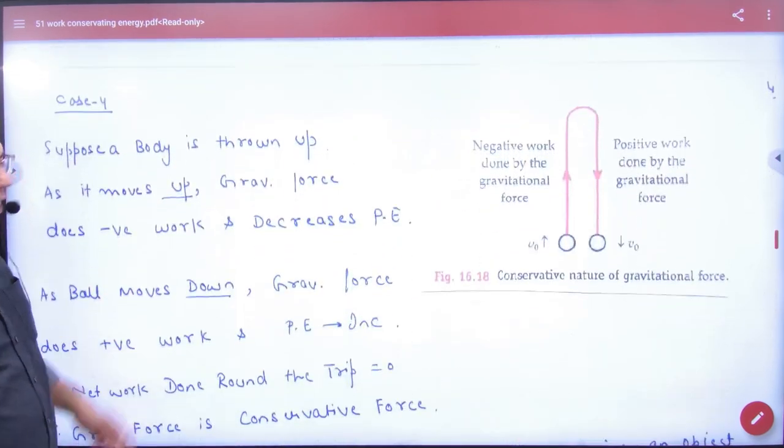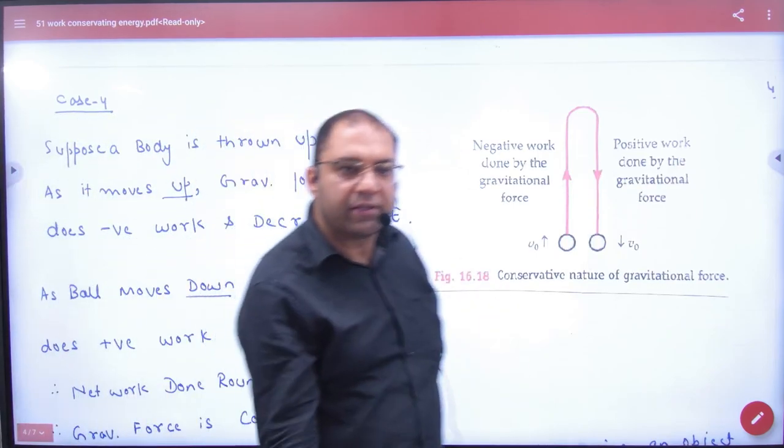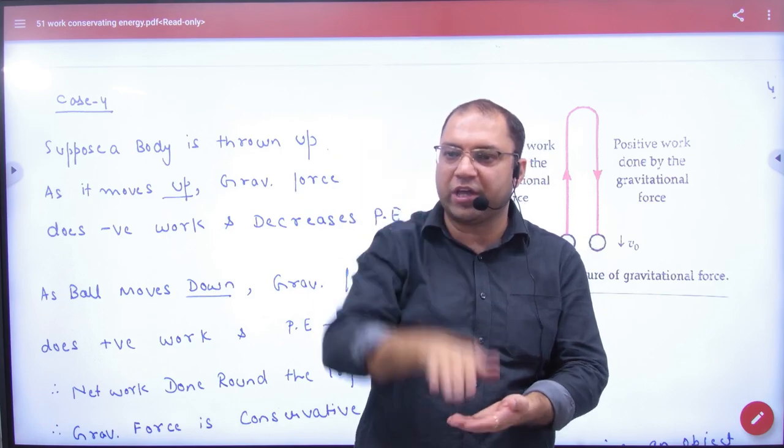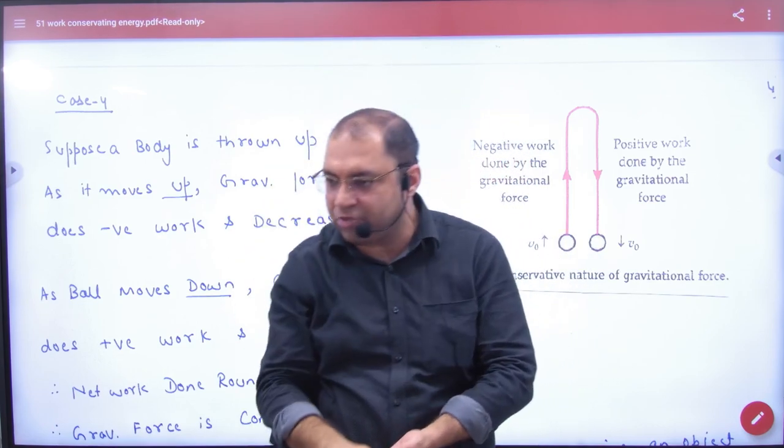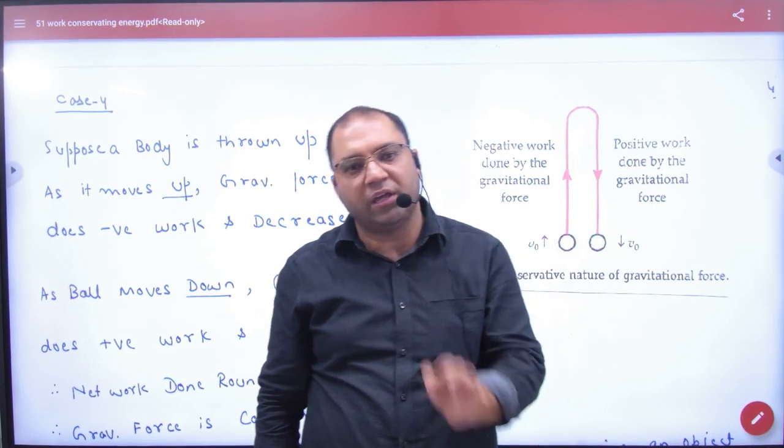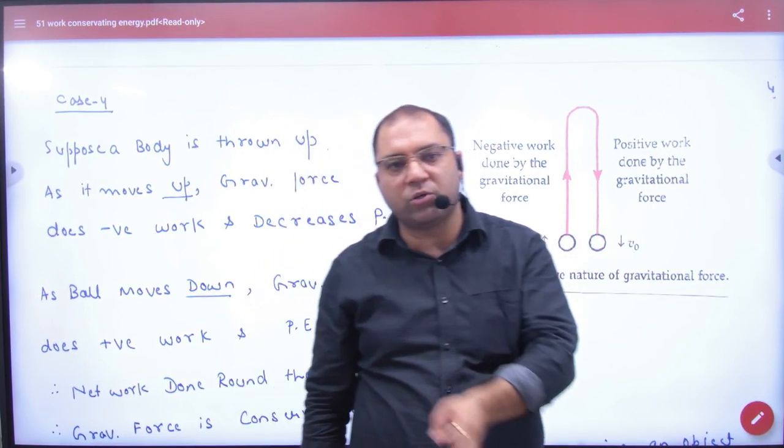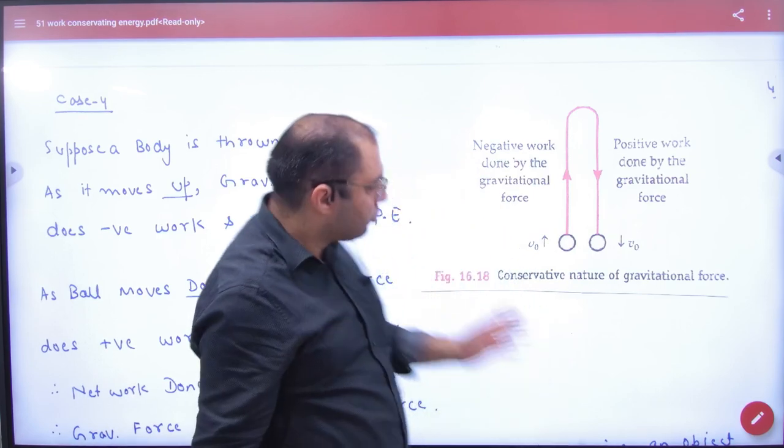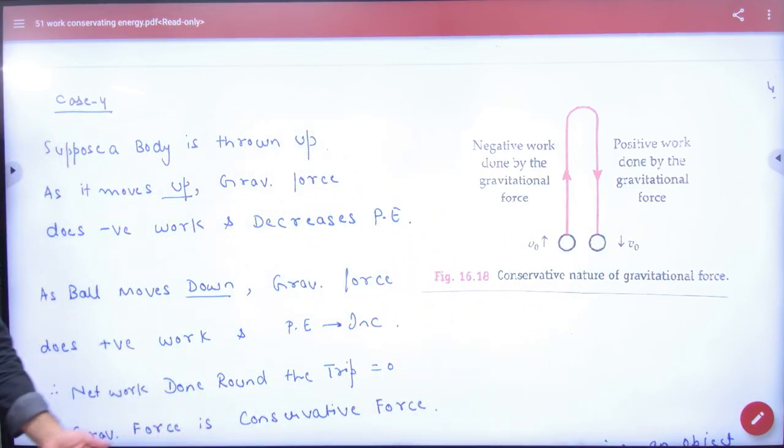Ek aur case kya hota hai. Aap ek body ko upar phenk de aur phir niche aayegi ussi point per. To upar ka work done aur niche ka work done ek minus mgh, ek plus mgh. To net amount of work done kya hoga? Zero. And conservative hone ki yahi nishani hai ki jahan se start hua, khatm wahi par hua. To net amount of work done is zero. To fourth case bhi dikh gaya.